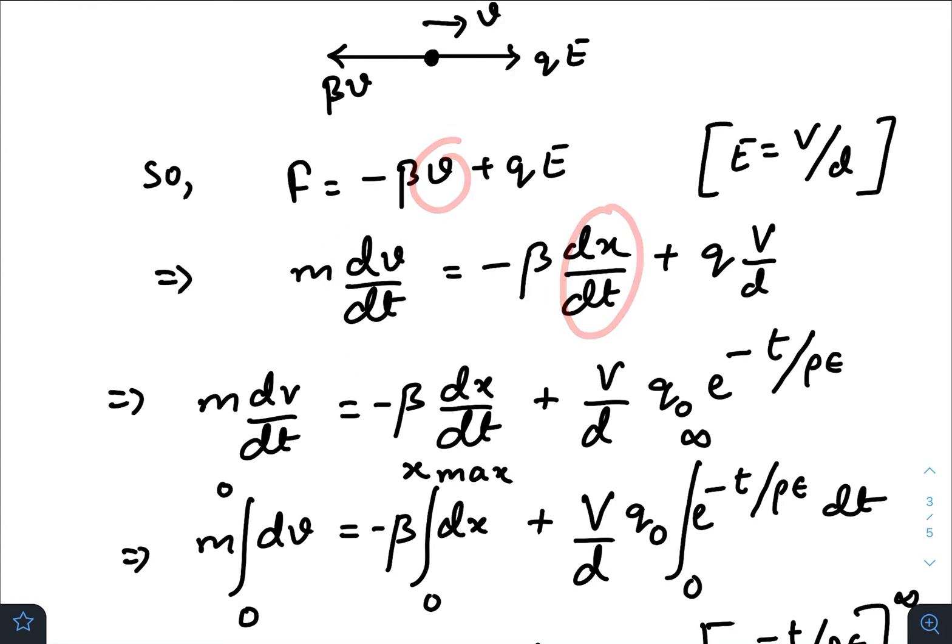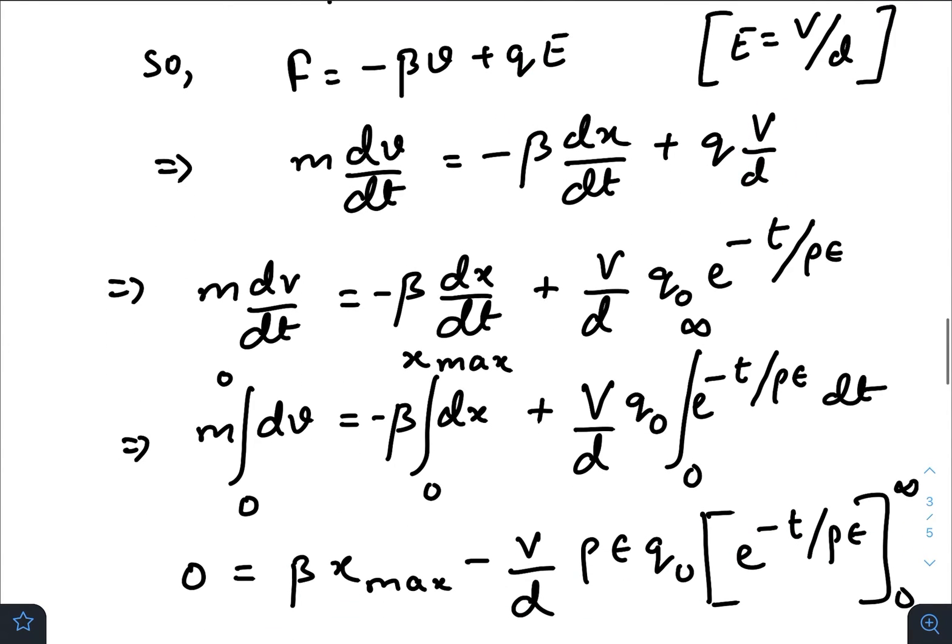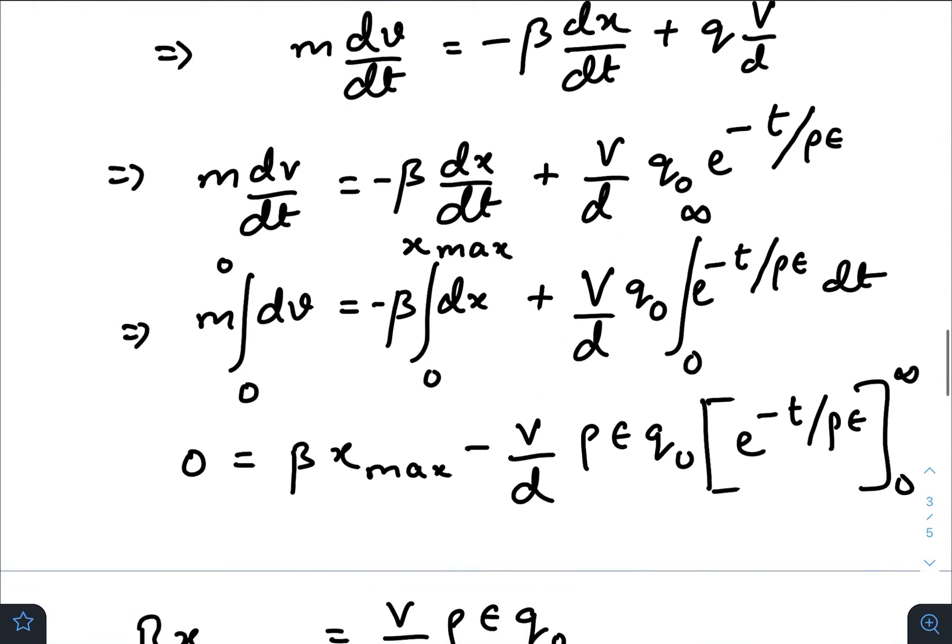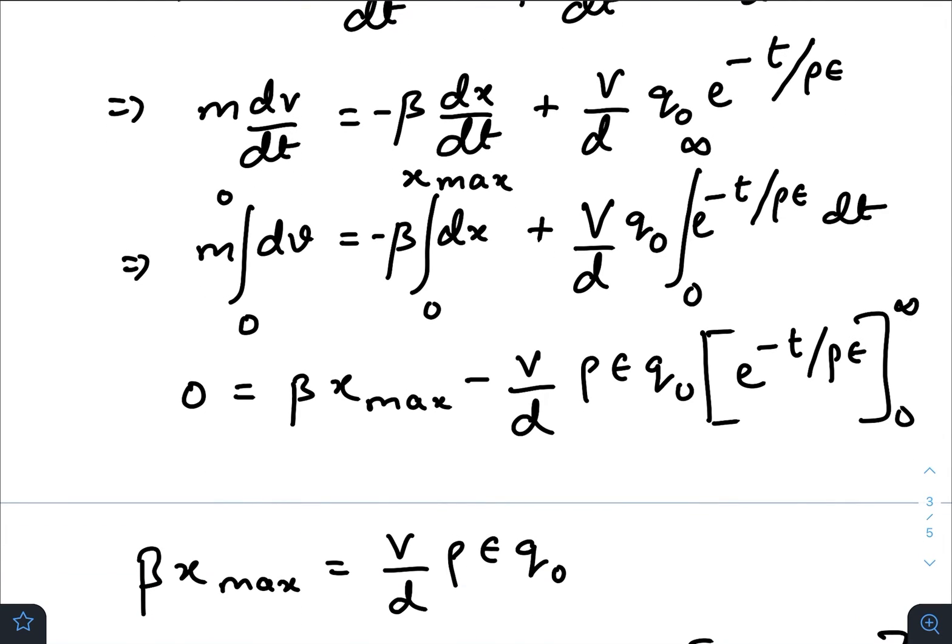F can be written as mass times acceleration. Acceleration is dv/dt, v is dx/dt, and E is V/d. In the next line, I have put q equals q₀ e to the power minus t divided by ρε. Multiplying both sides with dt, we get m dv minus β dx plus V/d q₀ times this one.